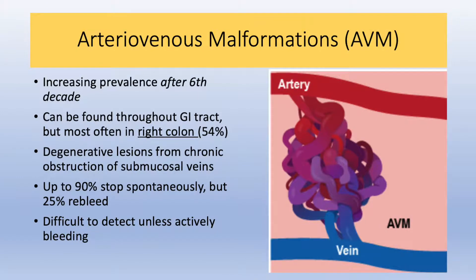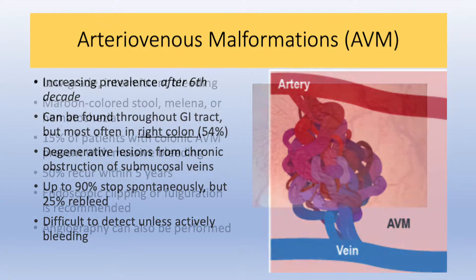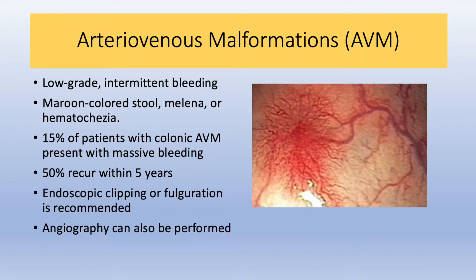AVMs — also known as angiodysplasias, vascular ectasias, or angiomas — constitute a large proportion of lower GI bleeds in older adults. They are most commonly found in the right colon, followed by the sigmoid, rectum, then jejunum and ileum, and are thought to arise from chronic obstruction of the submucosal veins. Up to 90% stop spontaneously, but about 25% will re-bleed. These are typically red, flat, ectatic blood vessels radiating from a central feeding vessel, with a diameter of about 2 to 10 millimeters, and can result in maroon-colored stool, melena, or frank hematochezia. About 15% of patients with colonic AVMs will present with massive bleeding, and over half will recur within five years. Endoscopic clipping or fulguration is recommended when bleeding; angiography is also performed.